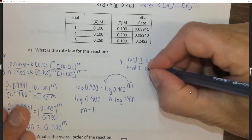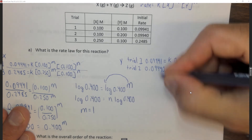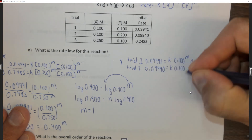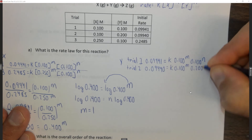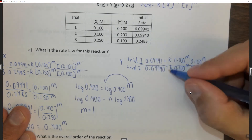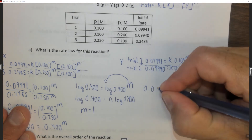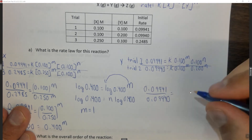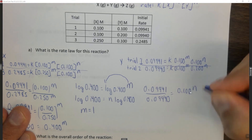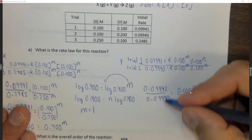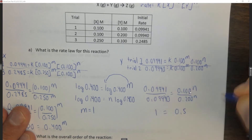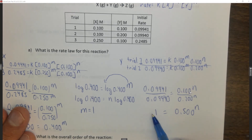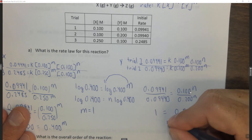For trial 2: 0.09940 = K × (0.100)^M × (0.200)^N. Dividing these out and canceling common terms gives 0.09941 / 0.09940 = (0.100)^N / (0.200)^N, which simplifies to approximately 1 = (0.500)^N. Taking the log of both sides, log(1) = 0, so N = 0.